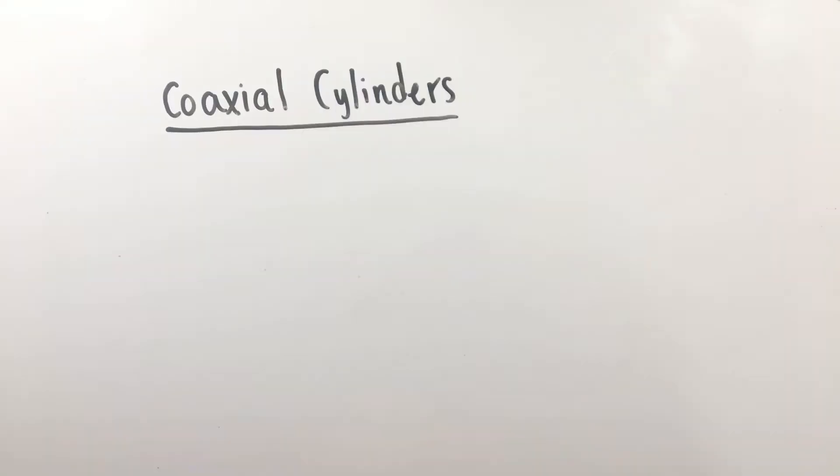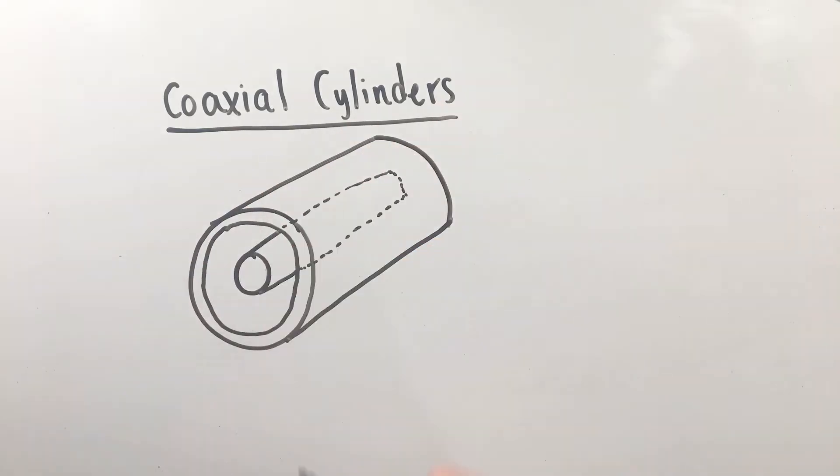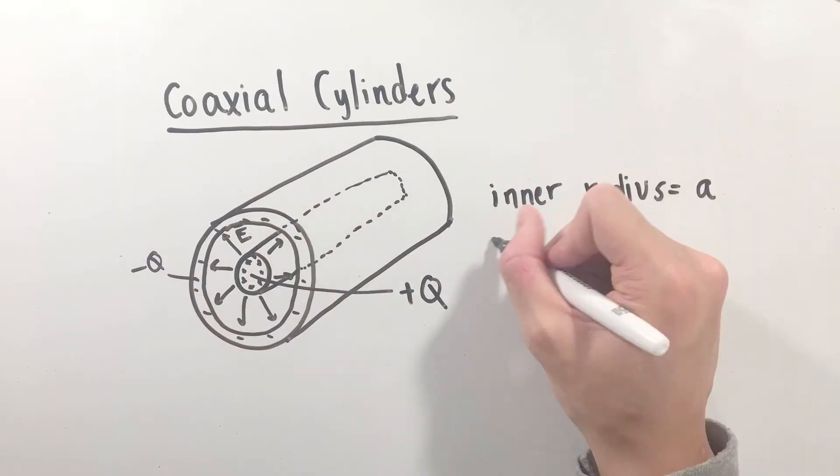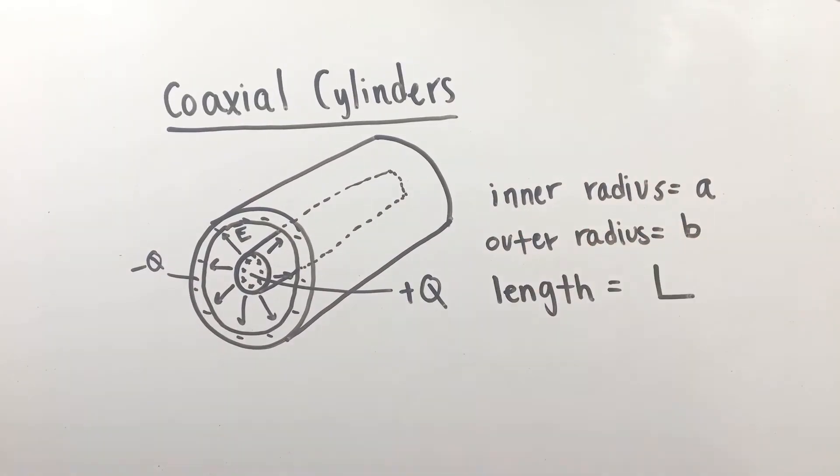This exact same process can be applied to another common capacitor type, coaxial cylinders. Assuming some inner radius A, outer radius B, length L, and charges plus and minus Q on each of the inside and outside cylinders, we can once again apply our three-step process to solve for its capacitance.